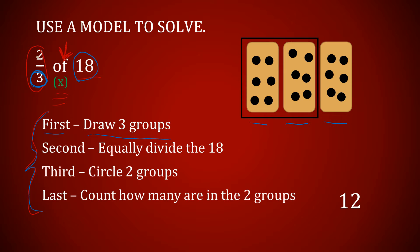Secondly, we are going to equally divide the number — I'm looking for the part of, so that's my whole number. I want to equally divide 18 into those three groups. Using the strategy we've done in class, we keep putting dots until we get to 18, counting by one: 1, 2, 3, 4, 5, 6, 7, 8, 9, 10, 11, 12, 13, 14, 15, 16, 17, 18. We have six in each group — an equal number in each group.